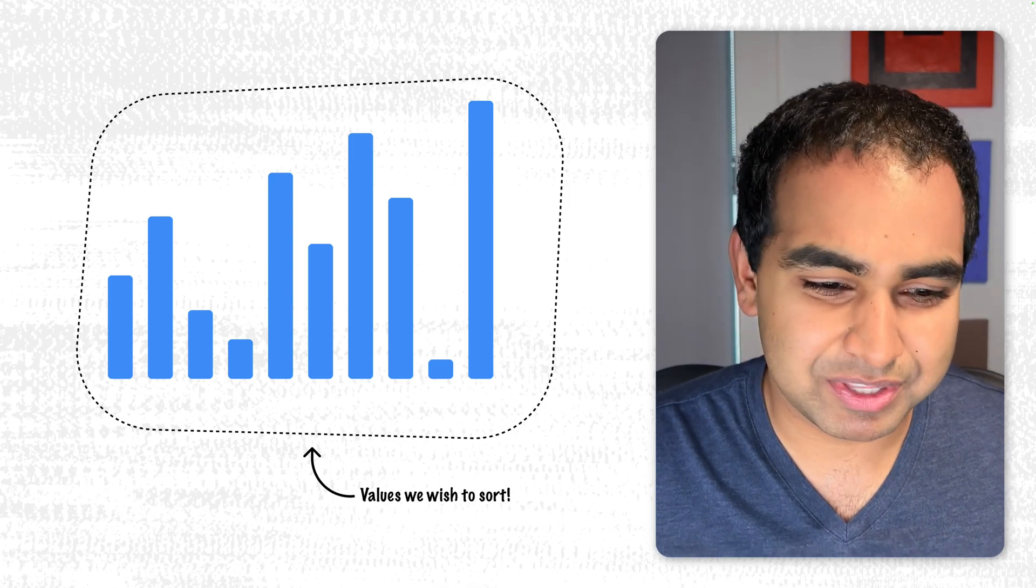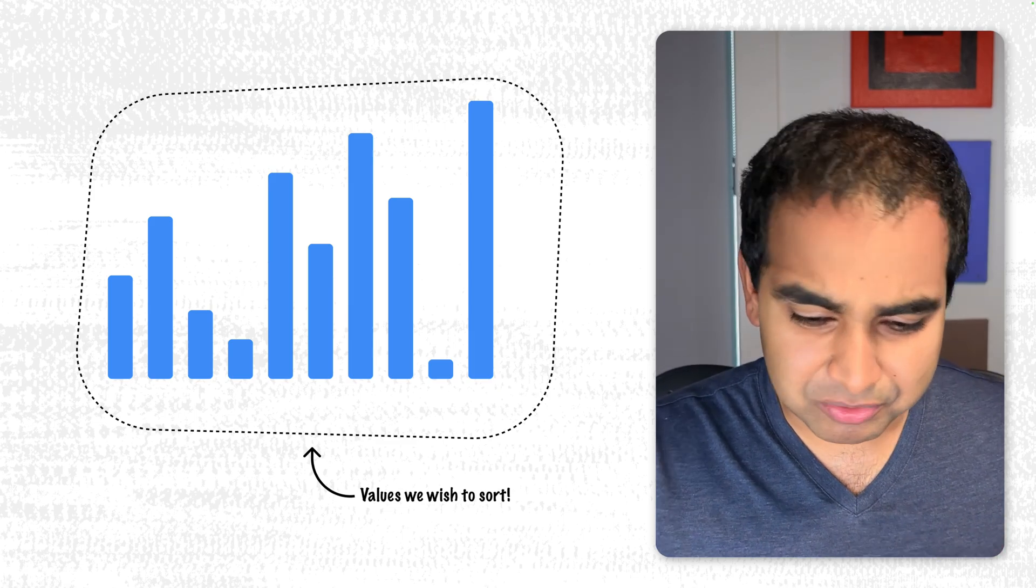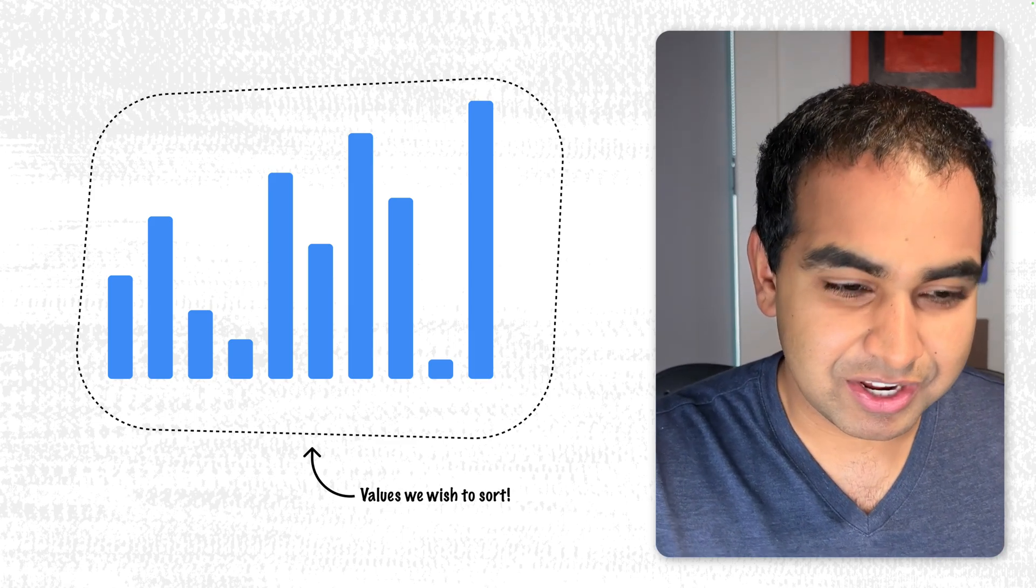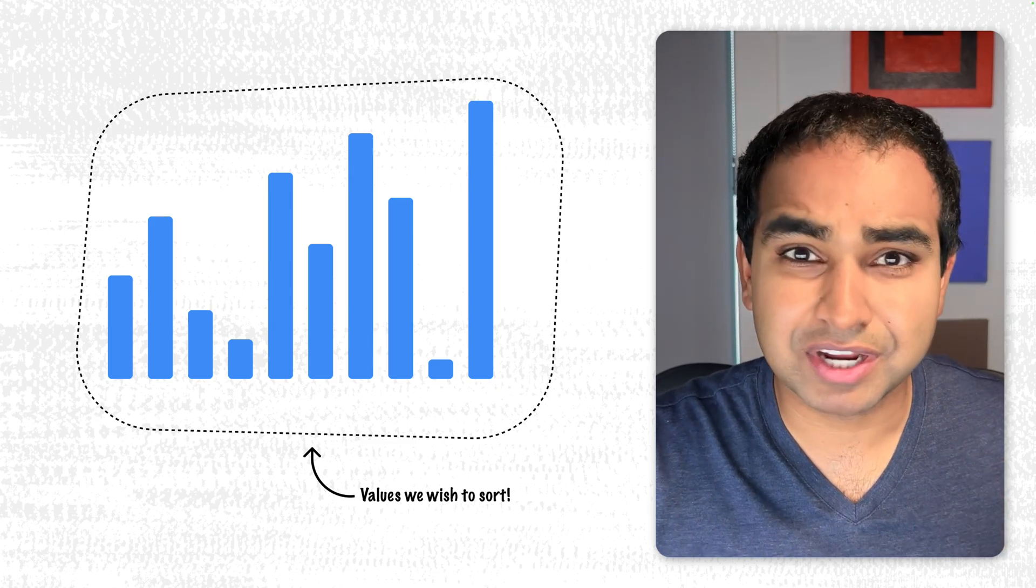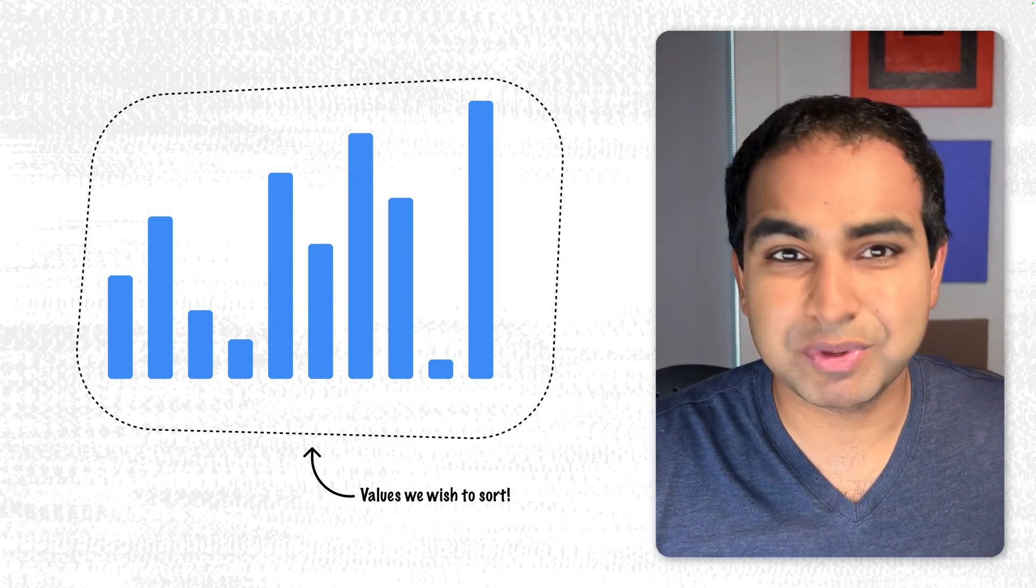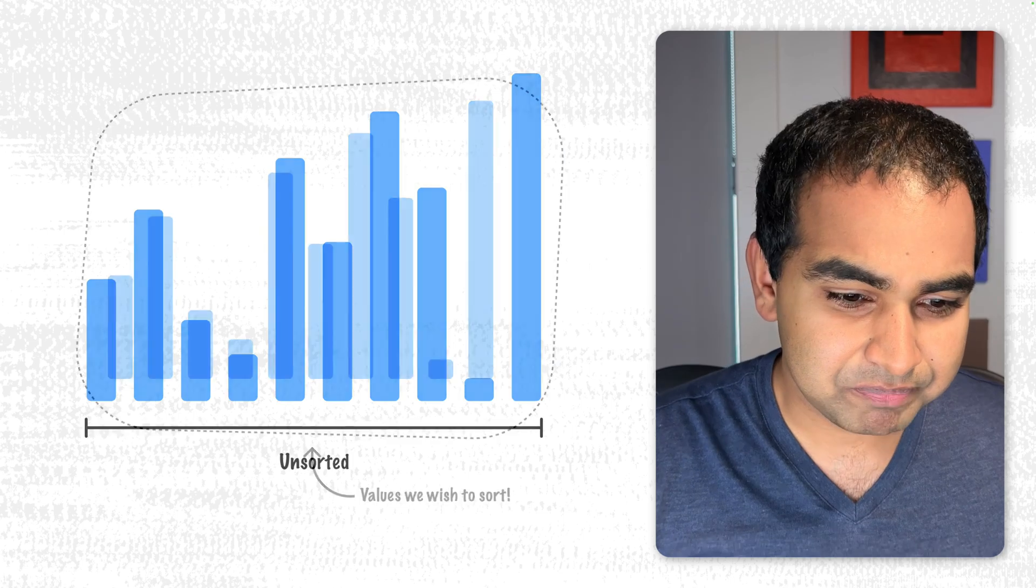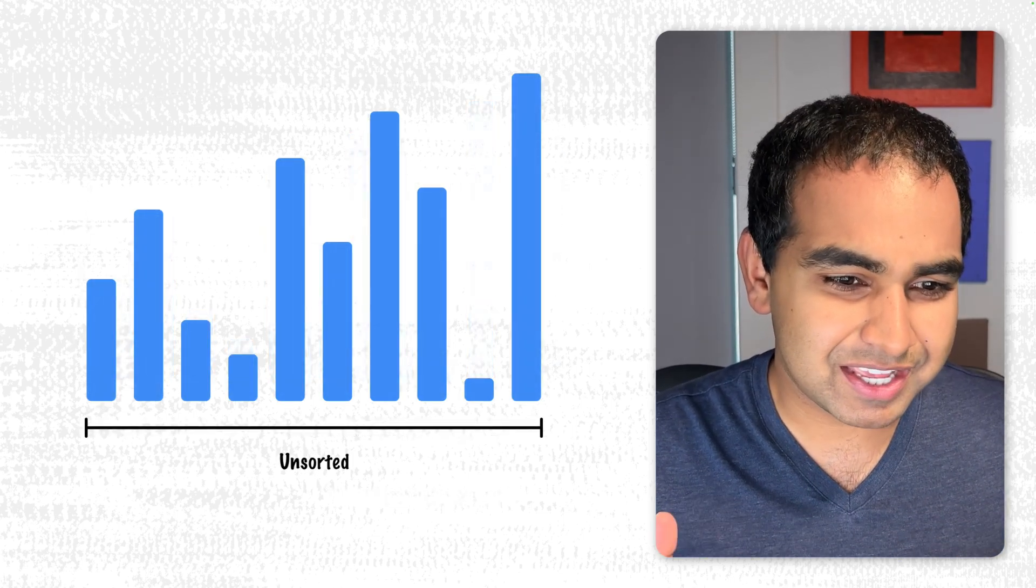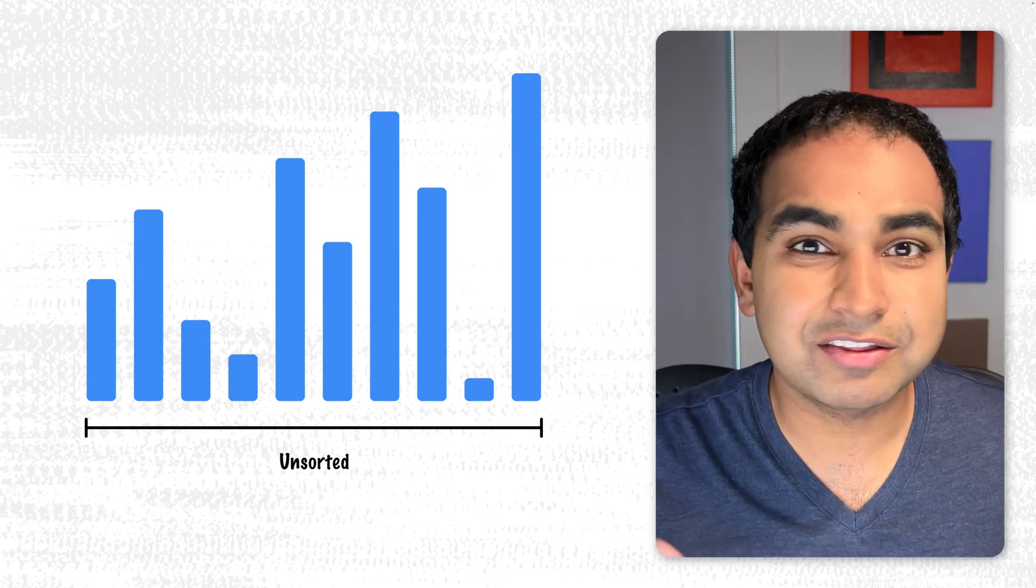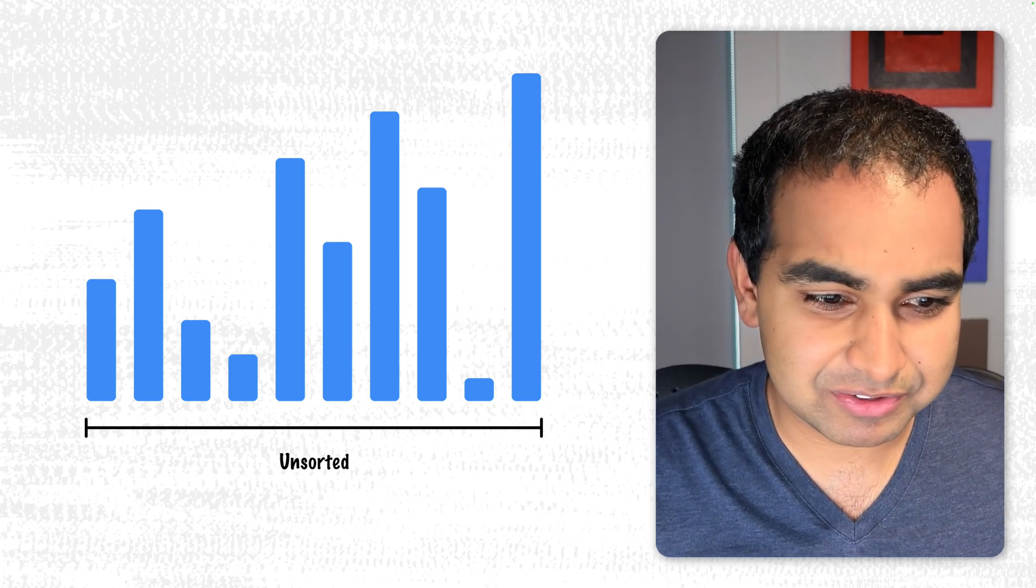I figured I'd switch things up a bit from usually talking about our collection of numbers into doing something different like what we see here. So these are the values we wish to sort. This is very similar to our unsorted deck of cards that we had earlier. We have no knowledge of what these values are, we just know that we have a bunch of values that we need to sort.